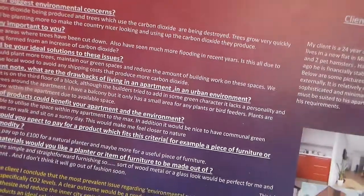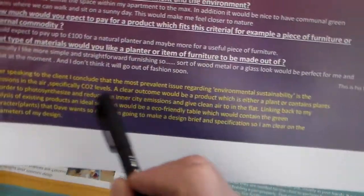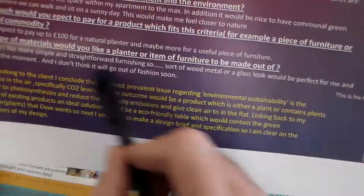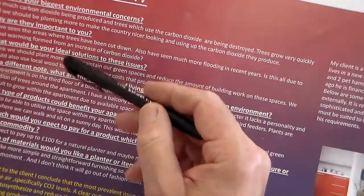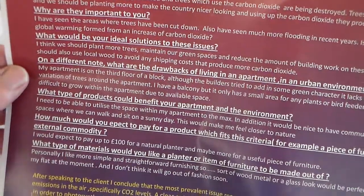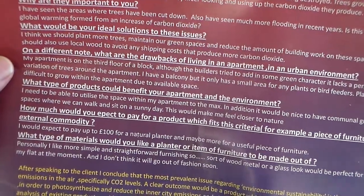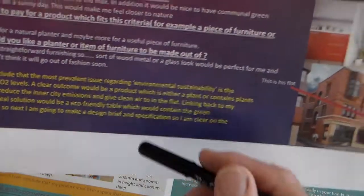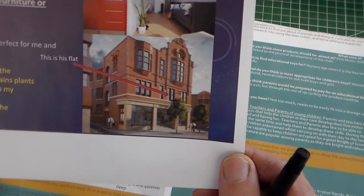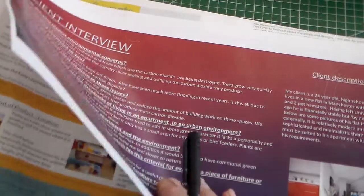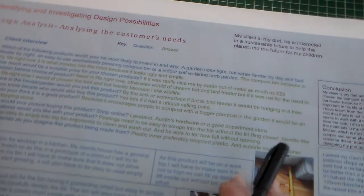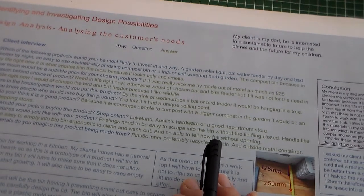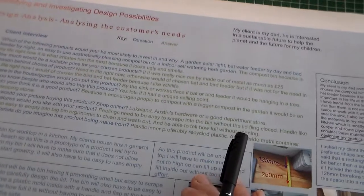This dark colour I don't think works so well. But what's good about this one — highlighted in yellow — is it says after speaking to the client I conclude the most prevalent issue. So there is a conclusion there. We've got the questions this person used, and there is their conclusion, so they've come to a clear conclusion. They have got some images there but I prefer the images in the other example. So this is sheet two, which is a client interview analysing the client's wants and needs. Thank you for watching Mr Ridley's Design and Technology.